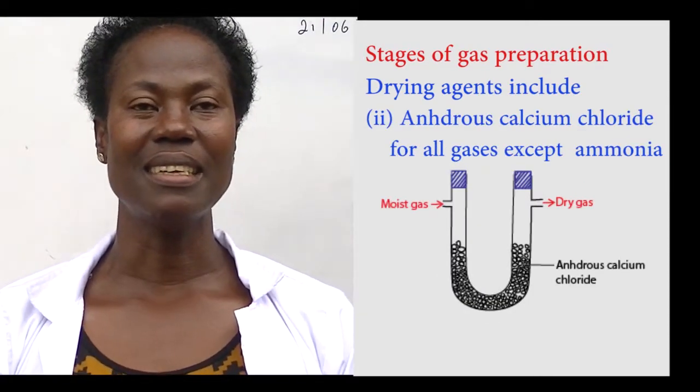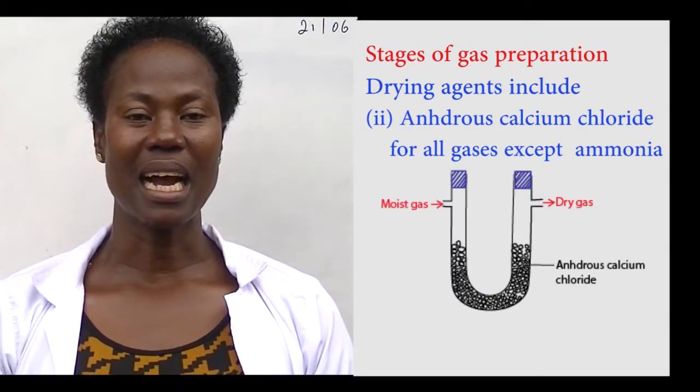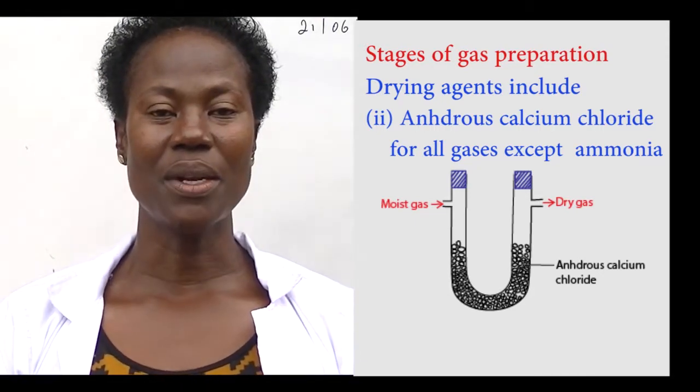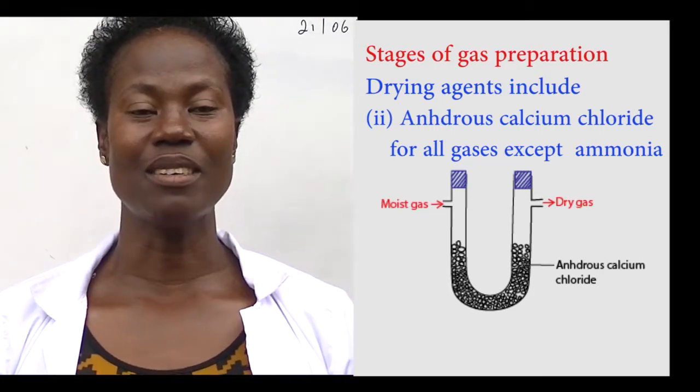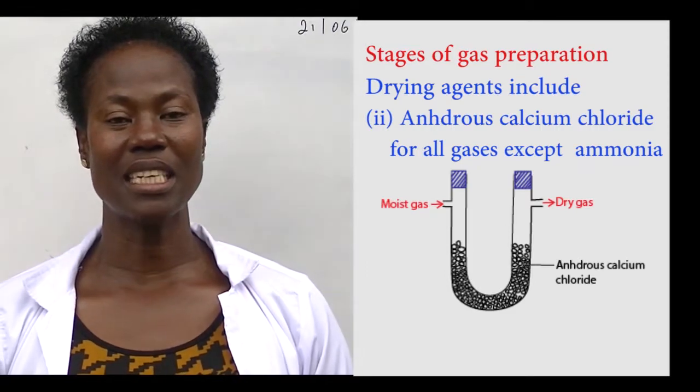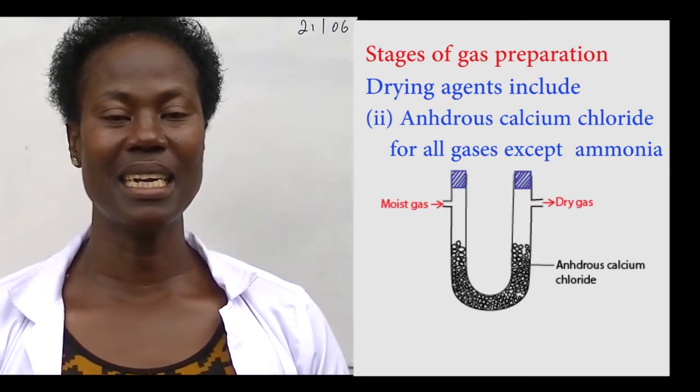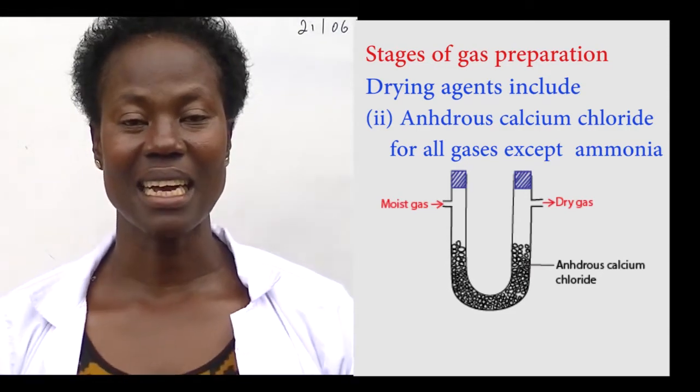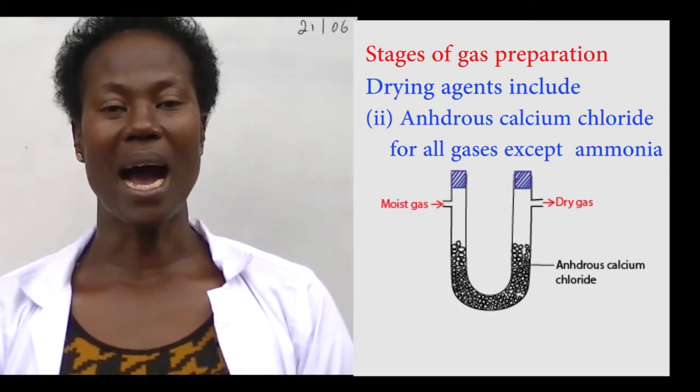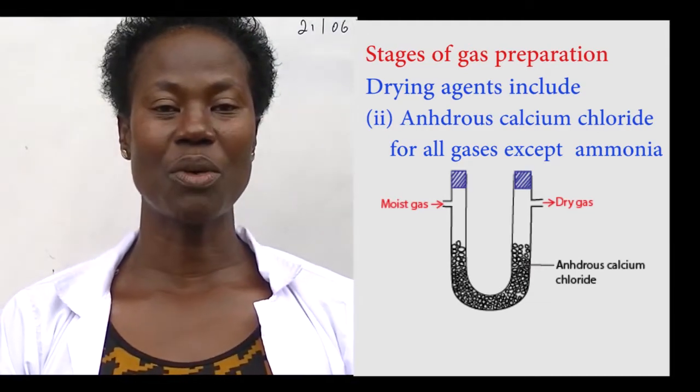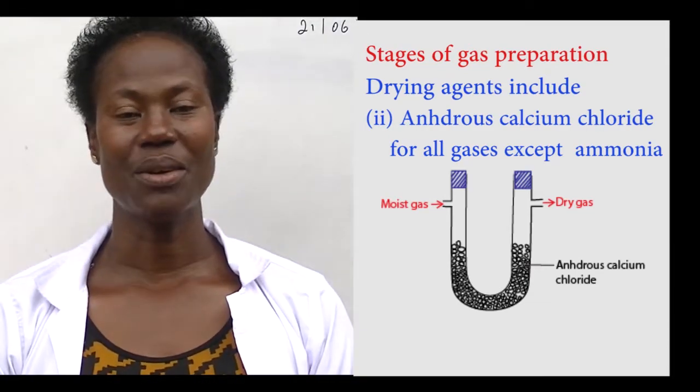Another drying agent is anhydrous calcium chloride. The moist gas is passed through anhydrous calcium chloride which is placed in a U-tube and is collected at the other end when it is dry. Ammonia gas cannot be dried by anhydrous calcium chloride because it reacts with it.